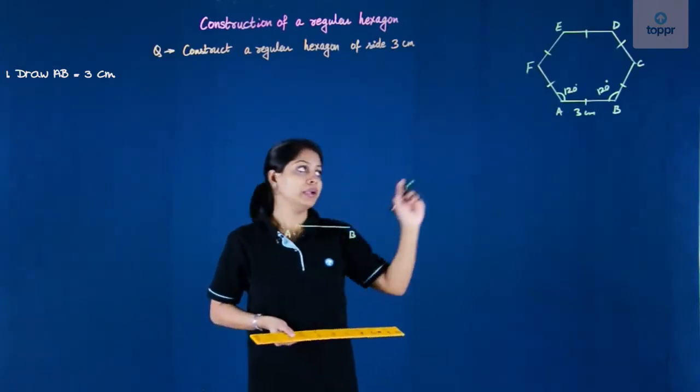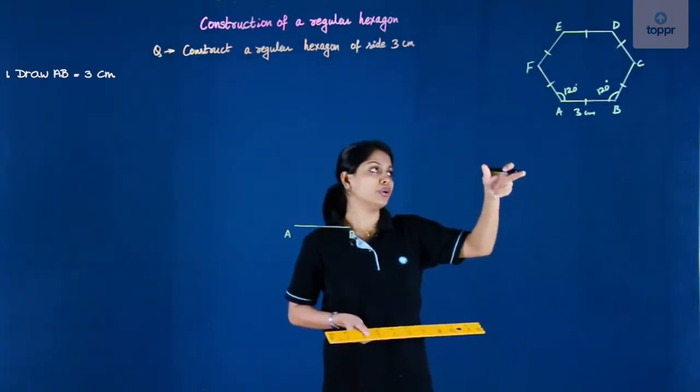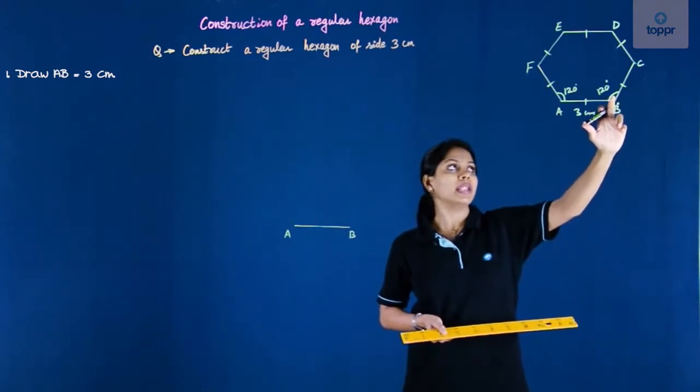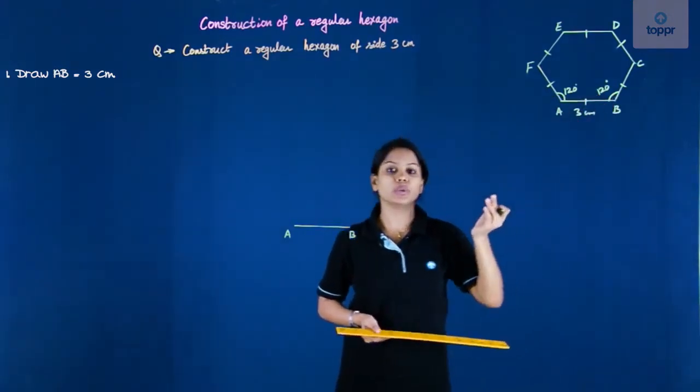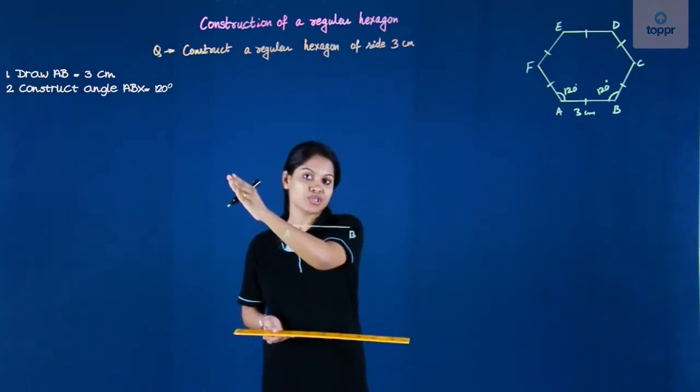This is AB here. And look at the rough diagram. According to the rough diagram, the angle at B and A each is 120, so we basically need 120 degree on both the sides.